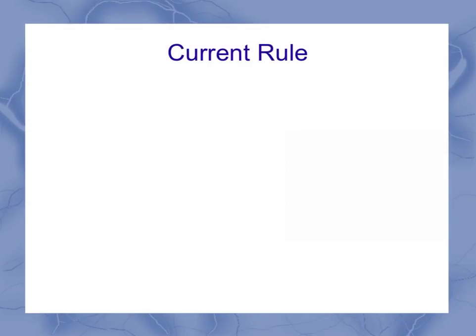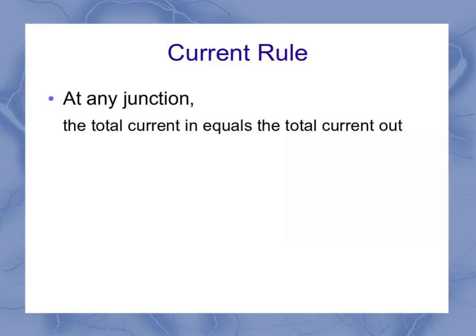So for the current rule, it states that at any junction, the total current in equals the total current out.